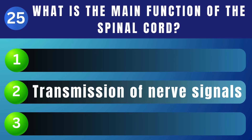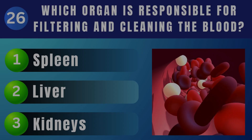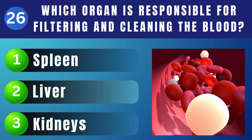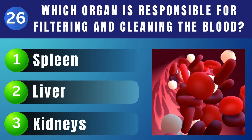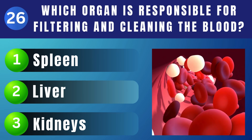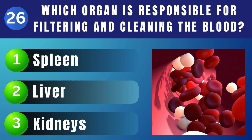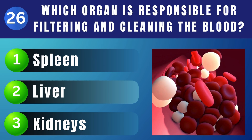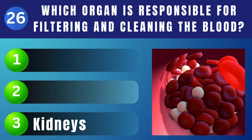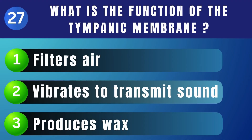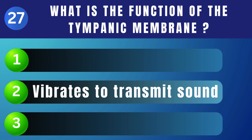What is the main function of the spinal cord? Transmission of nerve signals. Which organ is responsible for filtering and cleaning the blood? Kidneys. What is the function of the tympanic membrane? Vibrates to transmit sound.